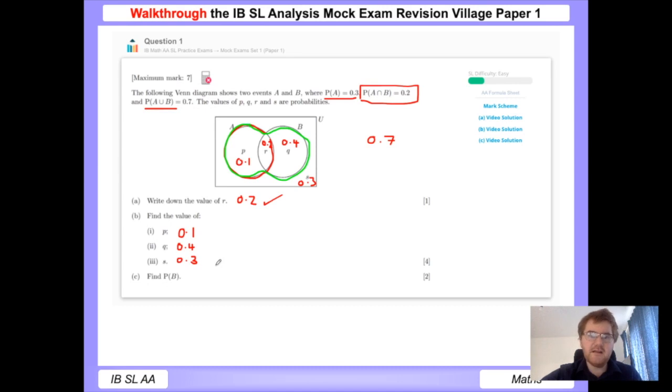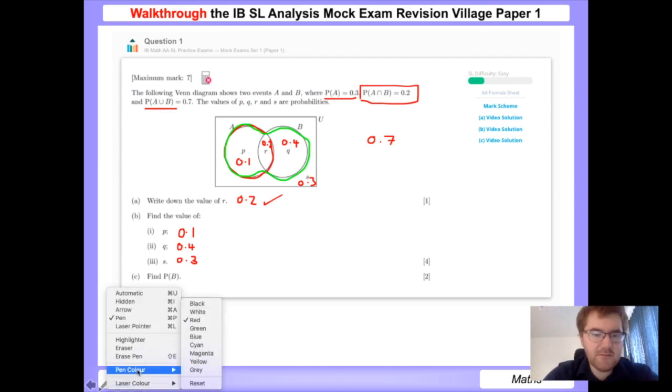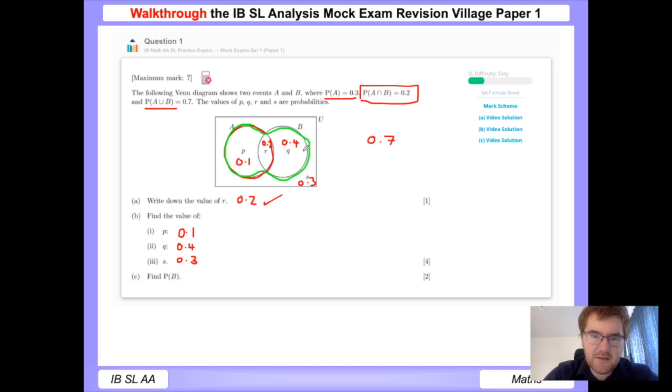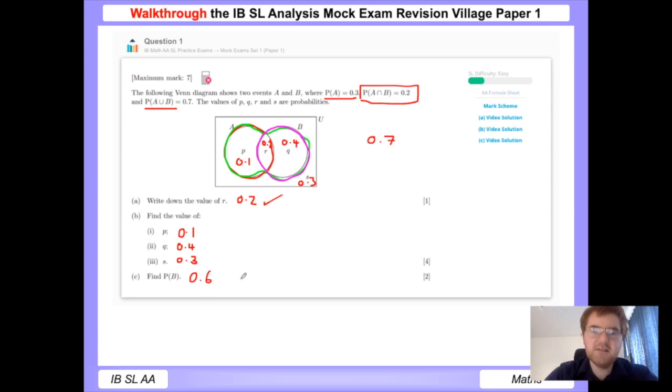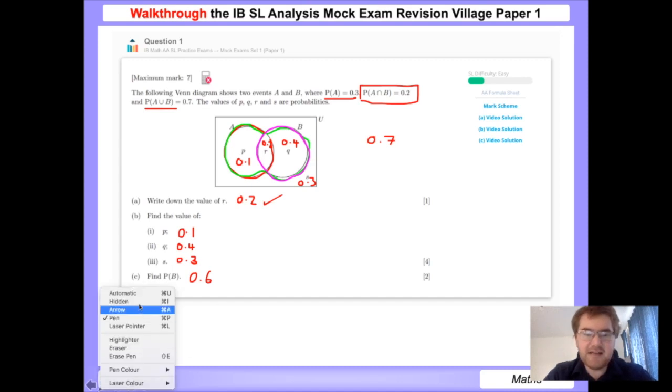And then to work out the probability of B, in terms of our circle here, it's going to be this part of our Venn diagram. So we just add up the two numbers here: 0.4 plus 0.2 is equal to 0.6. And we're done. That's a very nice way to start an SL Analysis paper and to grab seven marks from the off. Perfect.